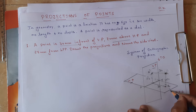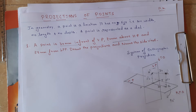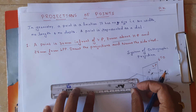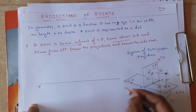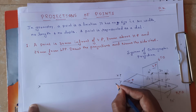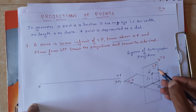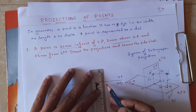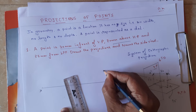Now I need to represent this on a white sheet. I am going to rotate the horizontal plane by 90 degrees in the clockwise direction. So I am going to draw it here — first I need to draw the XY line like this. Above the XY line it is the VP, below the XY line it is the HP. Let me represent a dash first — that is the front view. A dash is at a distance of 20 mm above, so from the XY line mark 20 mm above and represent this point as a dash.